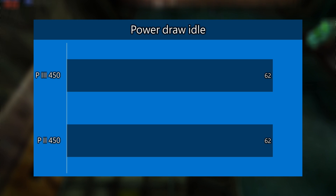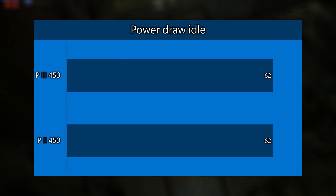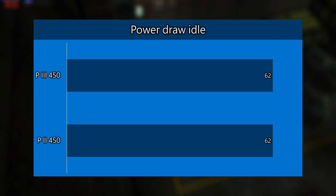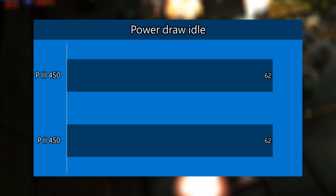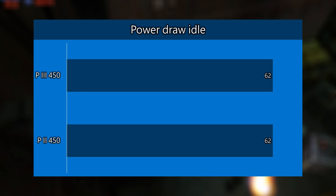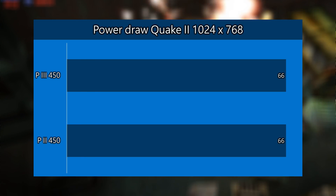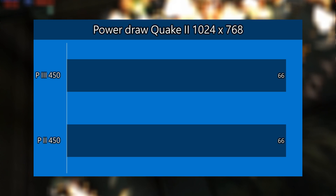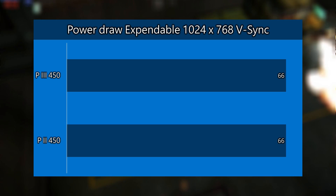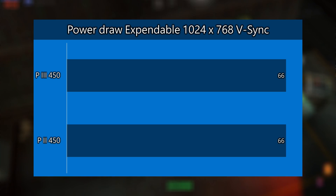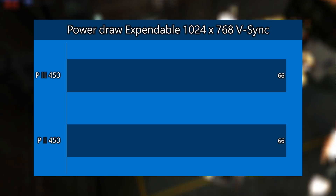Let's have a look at PowerDraw. On paper the Pentium 3 is meant to be a little bit more power efficient. However, under idle I couldn't measure a difference, same goes for playing Quake 2 — both machines pull 66W, and the same thing goes for Expendable: same 66W of PowerDraw.